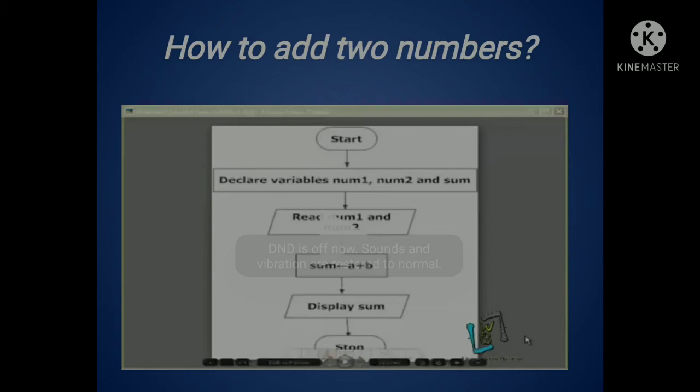Then, we will write our number in the process box. That is, sum is equal to a plus b. Then, our sum will be displayed in our output box. Then, we will stop the program. And our addition of two numbers program will be done.